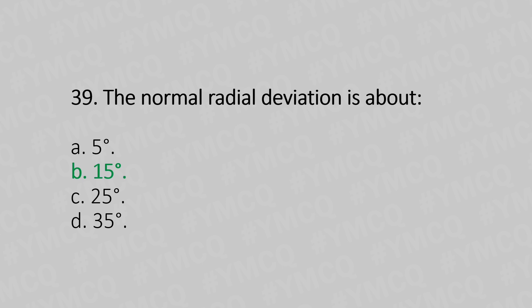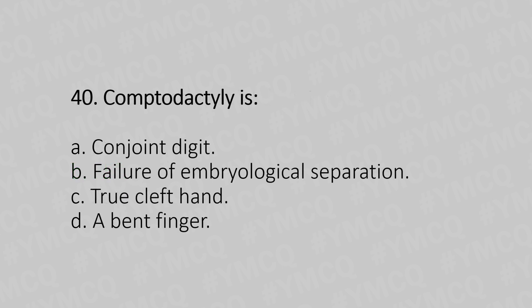Now let's move to question number 40. Camptodactyly is: Option A, conjoined digit. Option B, failure of embryological separation. Option C, true left hand. Option D, a bent finger. And the answer is Option D, a bent finger.